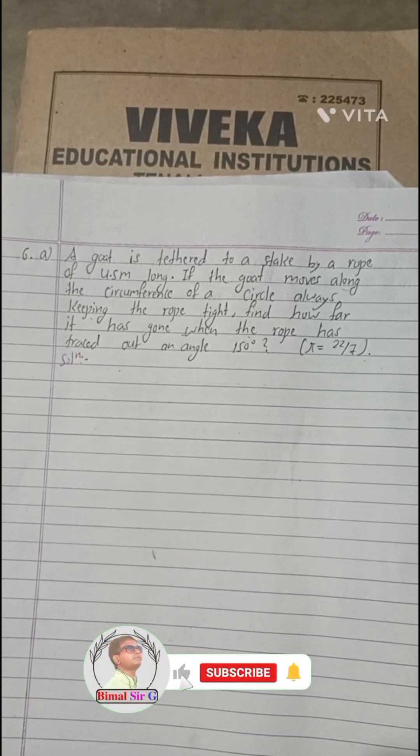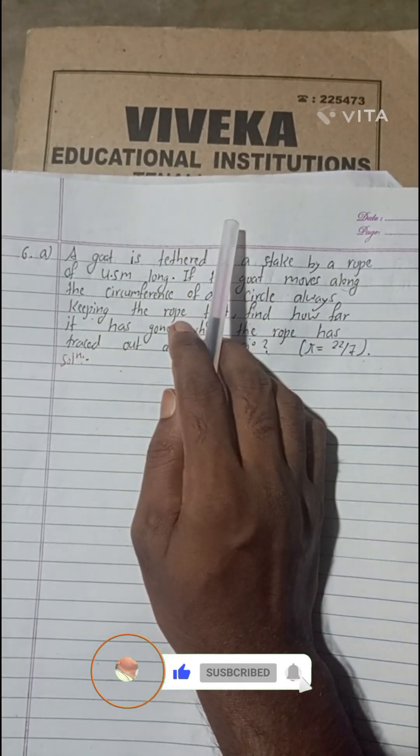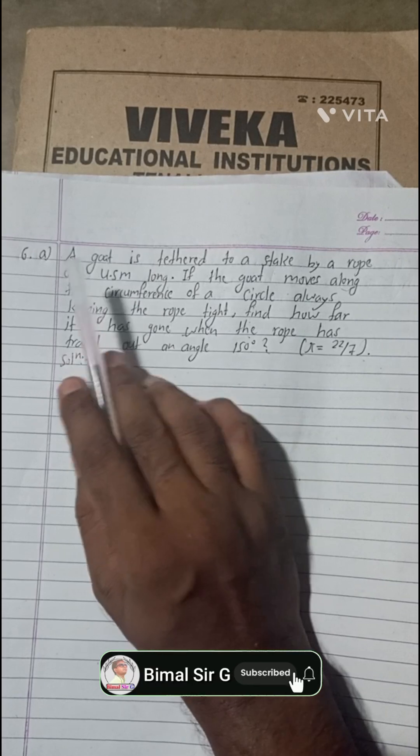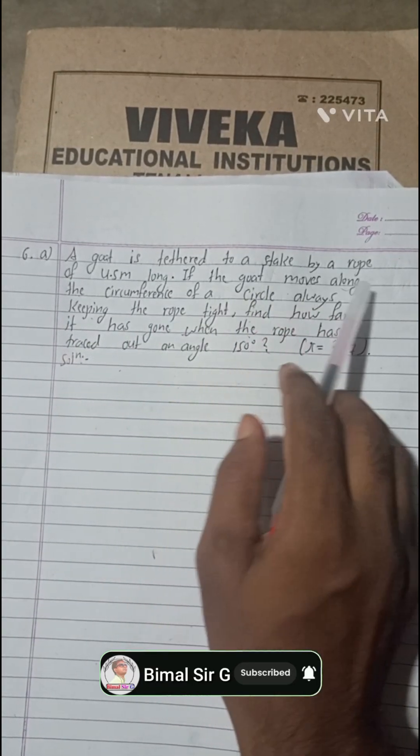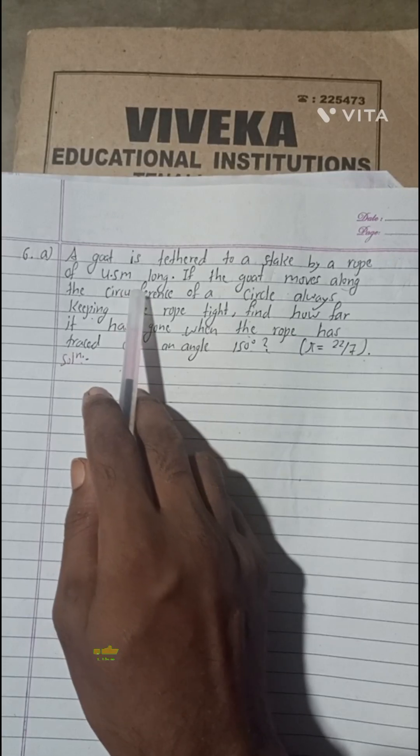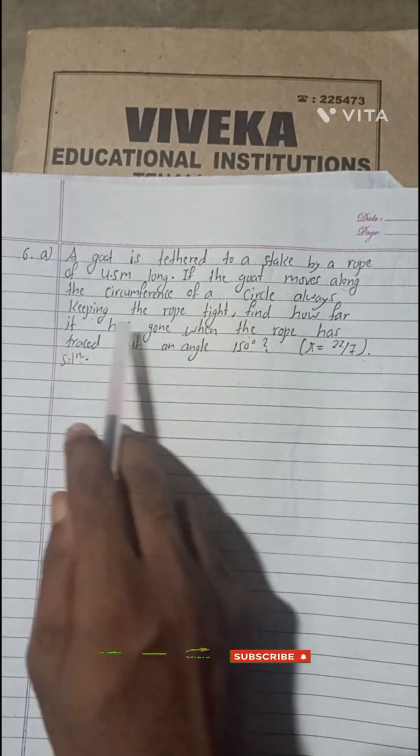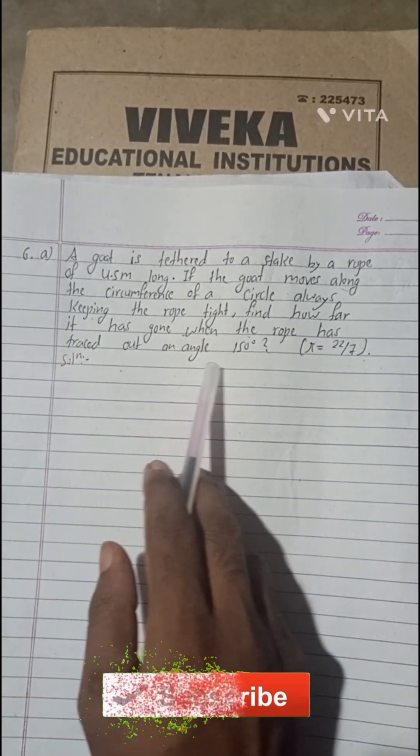Hi everybody, welcome back to Bimal Sarji YouTube channel. This is from Class 9 book, Optional Mathematics Exercise 8.3, question 6a. A goat is tied to a stake by a rope of 4.5 meters long. If the goat moves along the circumference of a circle, always keeping the rope tight, find how far it has gone when the rope has traced out an angle.